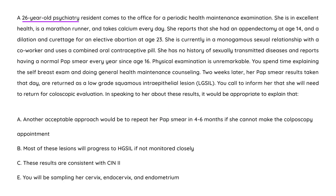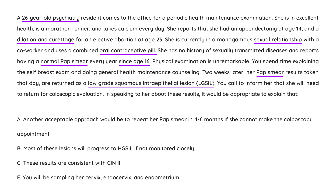A 26-year-old psychiatry resident comes to the office for a periodic health maintenance exam. She's in excellent health, a marathon runner, takes calcium daily. She reports an appendectomy at age 14 and a dilation and curettage for elective abortion at age 23. She's currently in a monogamous relationship and uses a combined oral contraceptive pill. No history of STDs; normal pap smears every year since age 16. Two weeks later, her pap results return as low-grade squamous intraepithelial lesion — LGSIL. She will need a colposcopic evaluation.